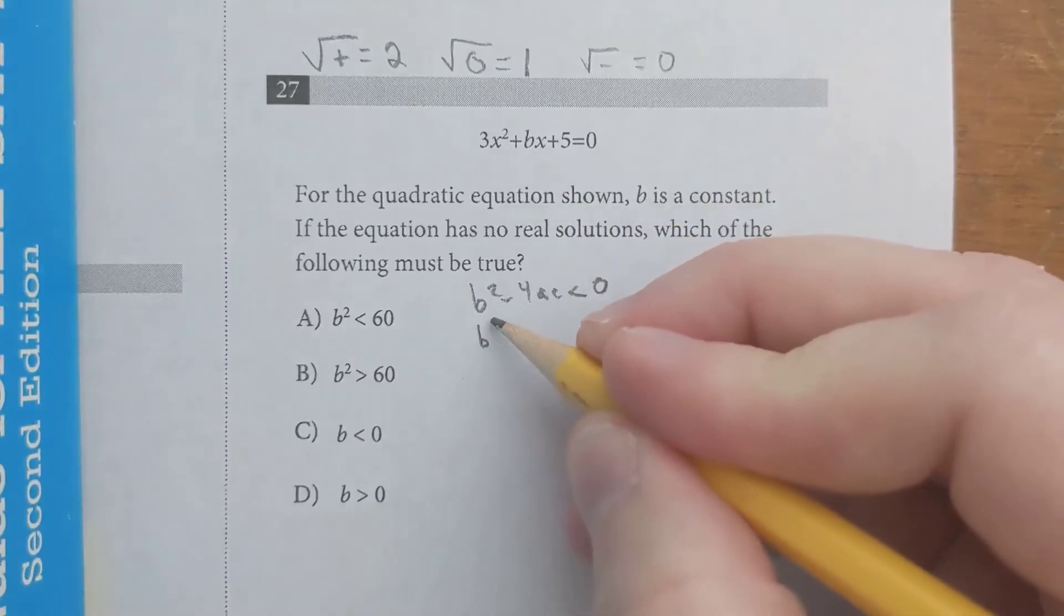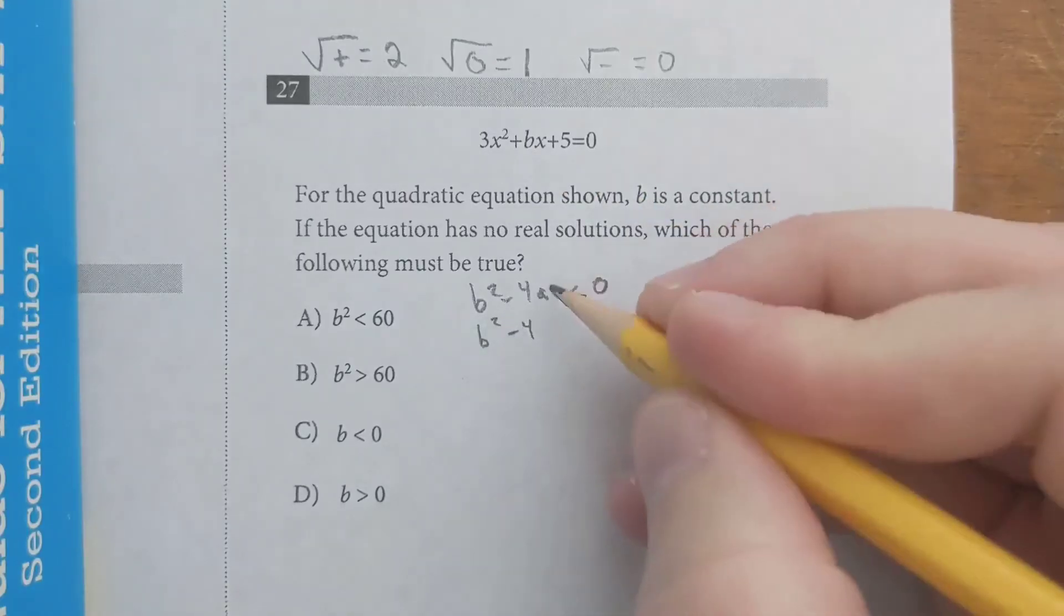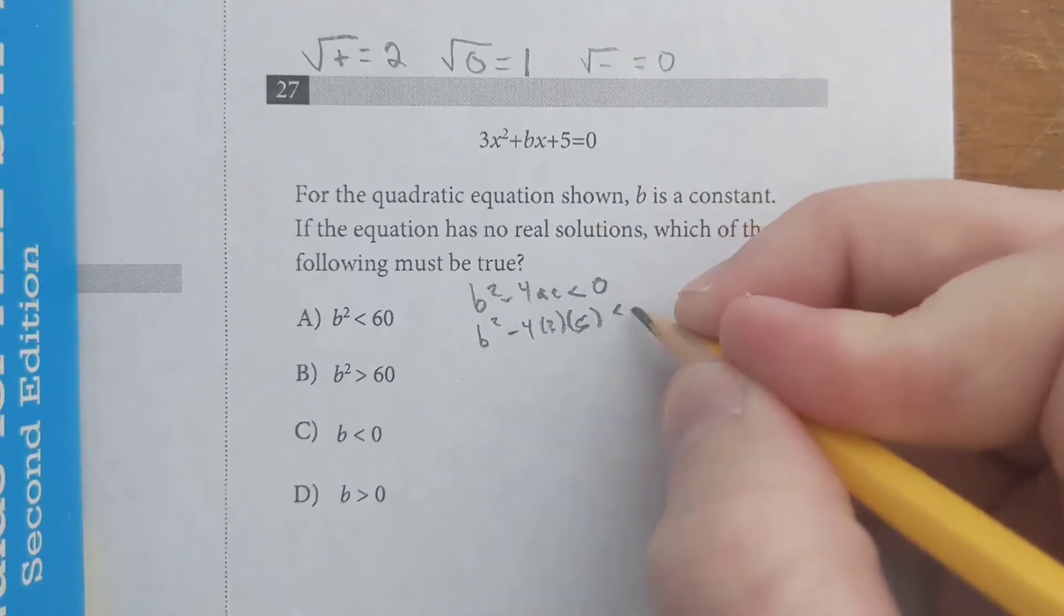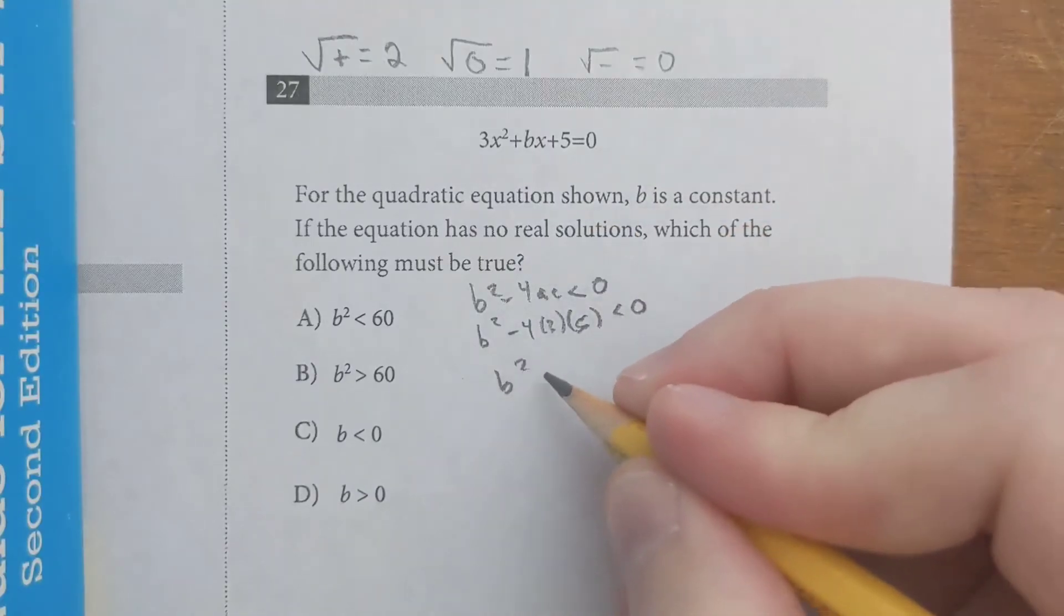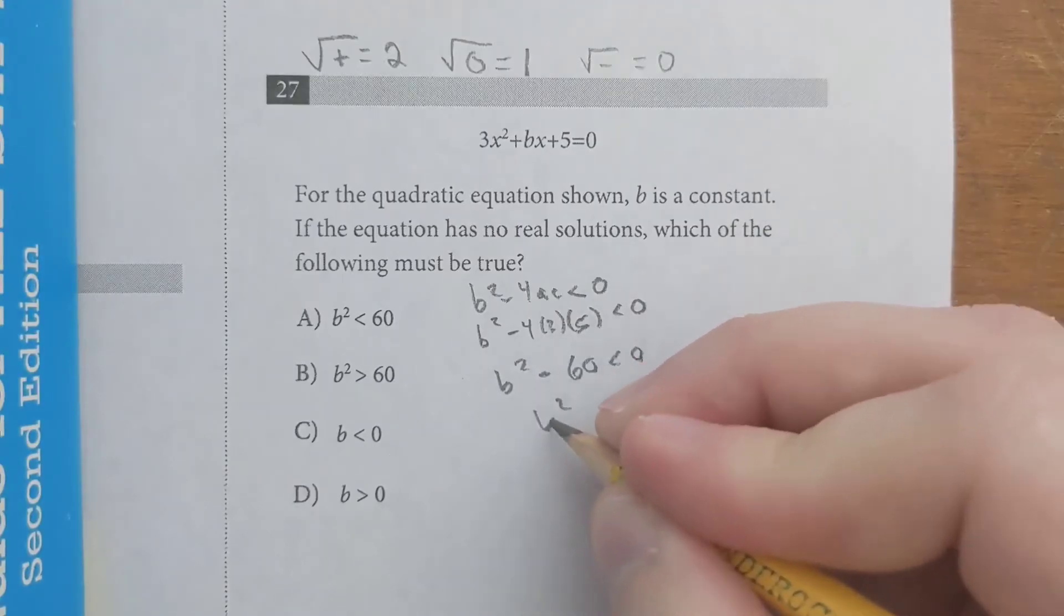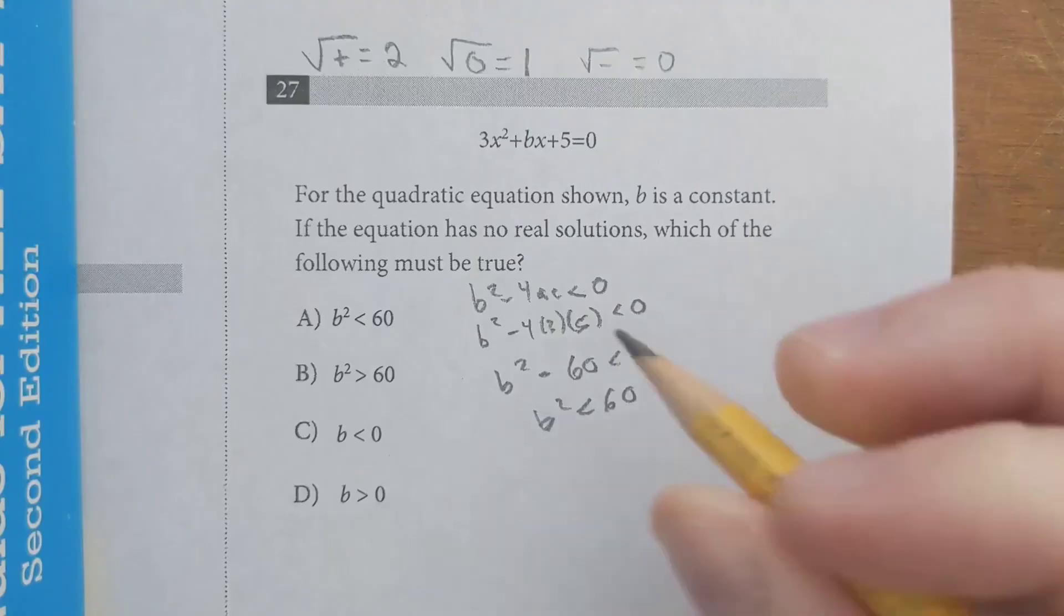Our b is b, so it's just b squared, minus 4. Our a is 3. Our c is 5. That's got to be less than zero. b squared minus 4 times 3 times 5 is 60. So b squared has to be less than 60.